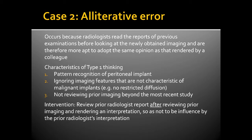This is an example of alliterative bias, which occurs because radiologists read the reports of previous examinations before looking at the newly obtained imaging and are therefore more apt to adopt the same opinion as a colleague, even if that opinion was incorrect. The Type 1 thinking characteristics include pattern recognition of a peritoneal implant (incorrect), ignoring imaging features not characteristic of malignant implants — for example, on the MRI there was no restricted diffusion or enhancement — and not reviewing prior imaging beyond the most recent study. The intervention is to review prior imaging and render an interpretation before reading prior radiologist reports, so as not to be influenced by a colleague's prior interpretation.